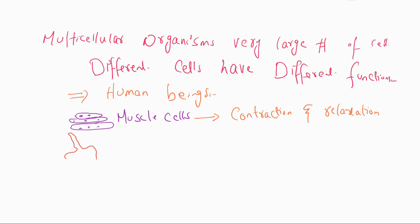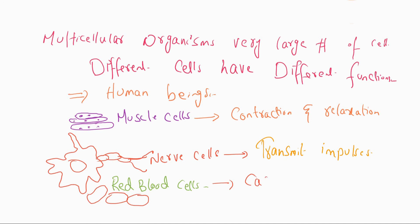Other cells in the body are nerve cells, which function to transmit impulses. Another type of cells present in human beings are red blood cells or RBCs, which carry oxygen. There are many other different types of cells. I have given you some examples present in the human body. Muscle cells do contraction and relaxation, nerve cells transmit impulses. Different types of cells have different functions.